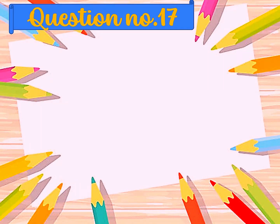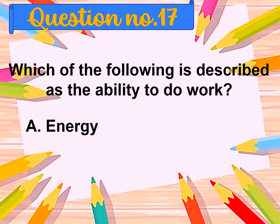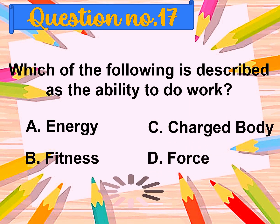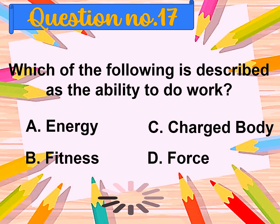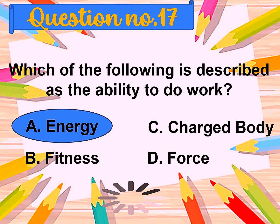Question number seventeen: Which of the following is described as the ability to do work? A. Energy, B. Fitness, C. Charged body, D. Force. The correct answer is energy.